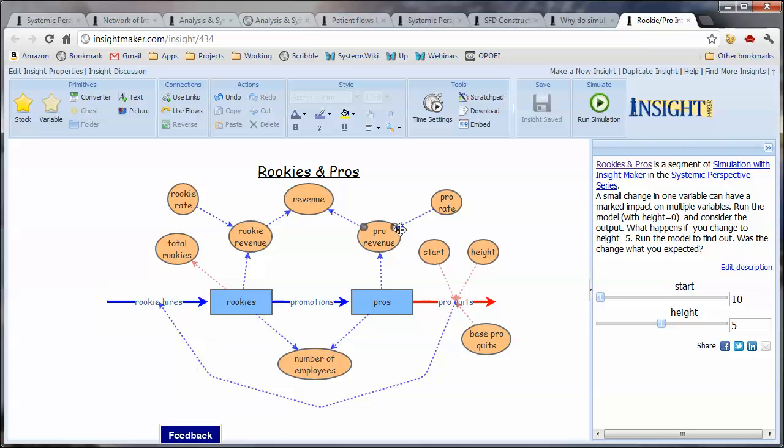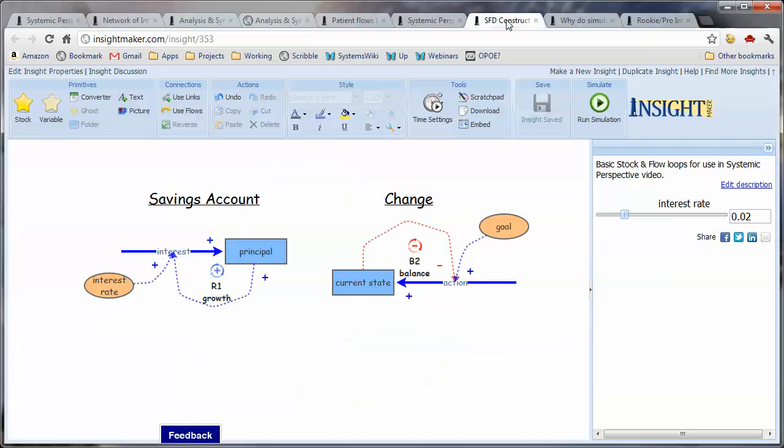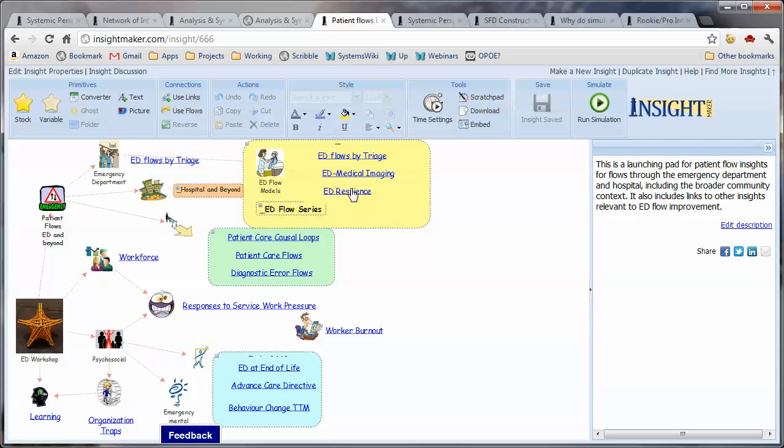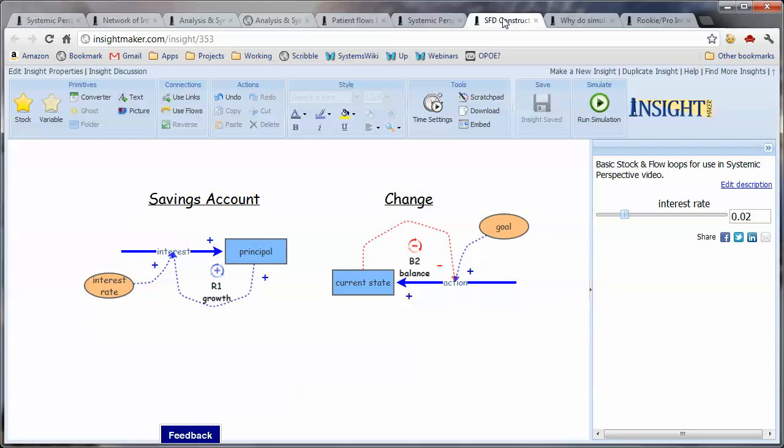Hopefully, this sequence has given you a sense that we create models to help us develop an understanding of the interactions associated with the situation to give us a better chance of developing an approach for actually dealing with the situation. In future videos, we'll get into how to develop the different types of diagrams, developing rich pictures and causal loop diagrams, and using InsightMaker to actually develop simulation models. Thank you. See you in the next video.